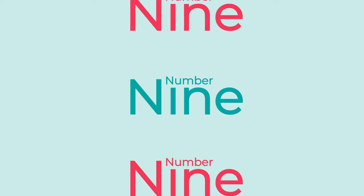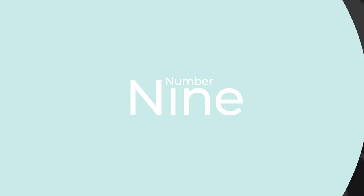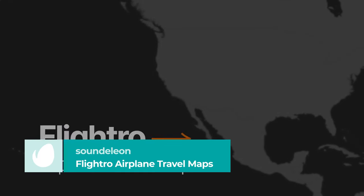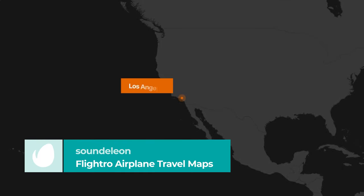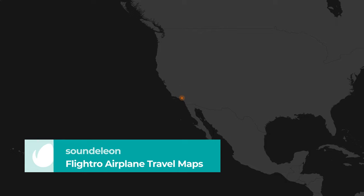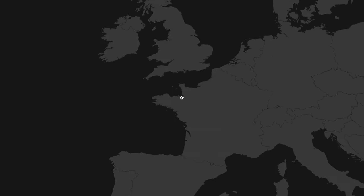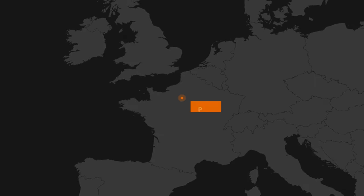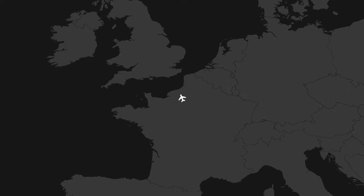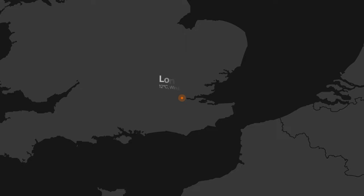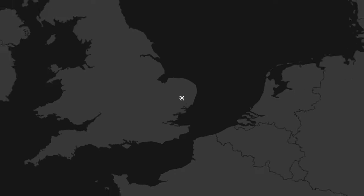Number 9. Flightro Airplane Travel Maps by Sandilion. Flightro is a huge After Effects map animation toolkit that lets you show airline movement in seconds. You can illustrate 10 spots in succession on a high-detail map, allowing you to zoom in and out anywhere in the world without compromising on quality.